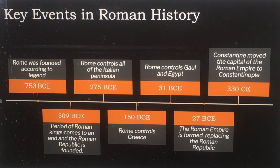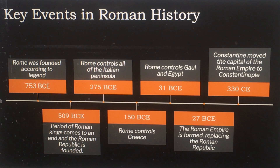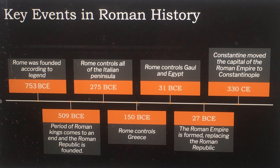509 BCE marks the end of the period of Roman kings and the founding of the Roman Republic. By 275 BCE, Rome controls all of the Italian peninsula. By 150 BCE, Rome controls Greece. By 31 BCE, Rome controls Gaul and Egypt — what is now France and Egypt. In 27 BCE, the Roman Empire is formed, replacing the Roman Republic.